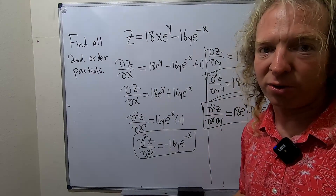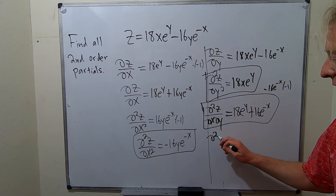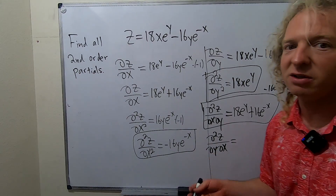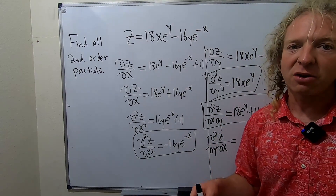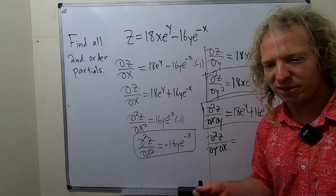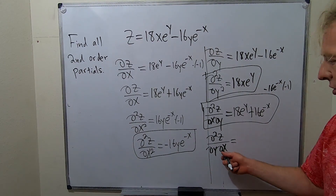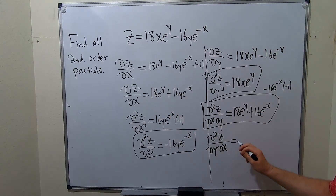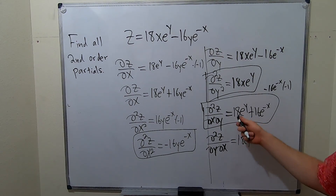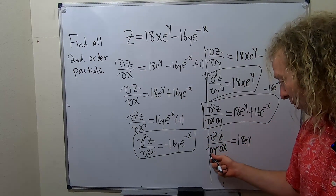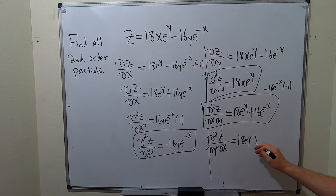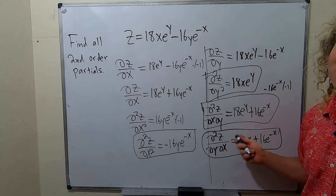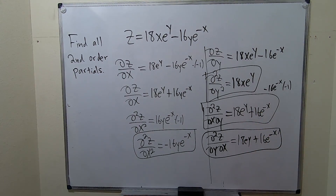This should be the same as the other mixed partial, but it's a good idea to compute it so you can check your answer. You should get the same thing in most of these problems — in fact, in all of these problems we're doing — because everything is continuous. Whenever it's continuous, the mixed partials are equal. That's called Clairaut's theorem, or Schwartz's theorem. This notation means first you do x, then you do y. We already found del z del x, so we take its partial with respect to y. The derivative of 18 e to the y with respect to y is 18 e to the y, and the derivative of 16y e to the negative x with respect to y is 16 e to the negative x. It's the same thing — we know we did it right. I hope this video has been helpful. Take care.